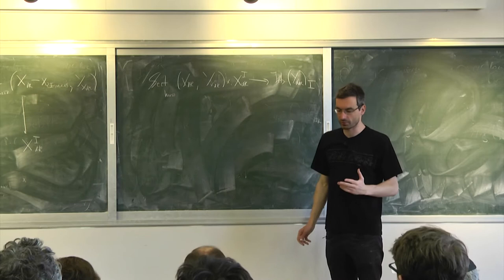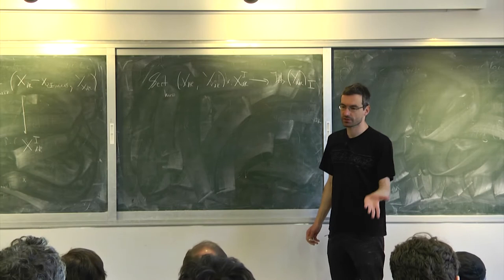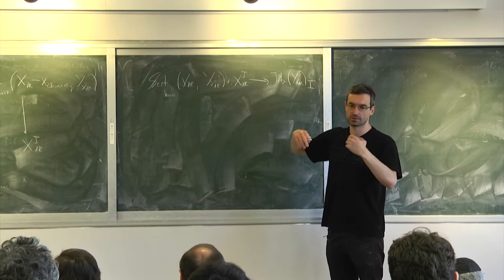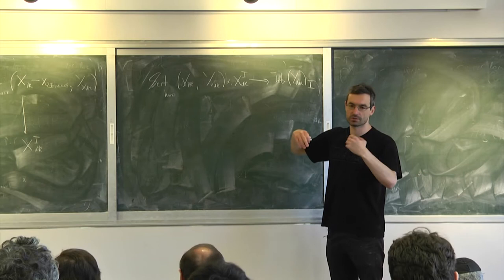This is the kind of substitution — you'll see this map, which was used for example when we constructed the functor LocSys: we mapped LocSys to a product of local systems on the formal disk. That's exactly the evaluation map — you had a map from S times X to your Y, and you restricted to the formal disk.